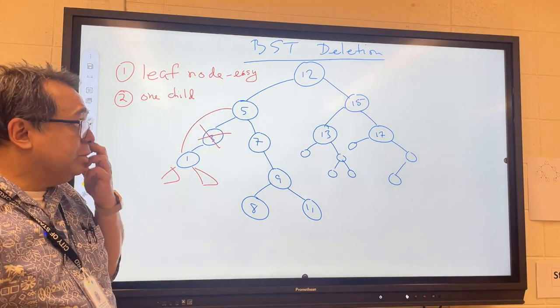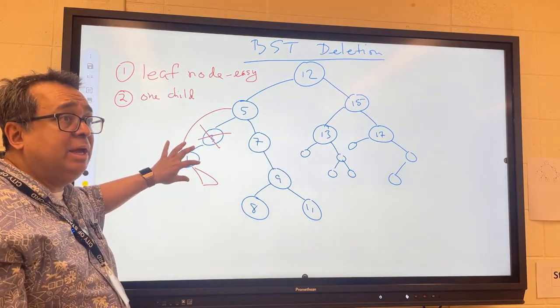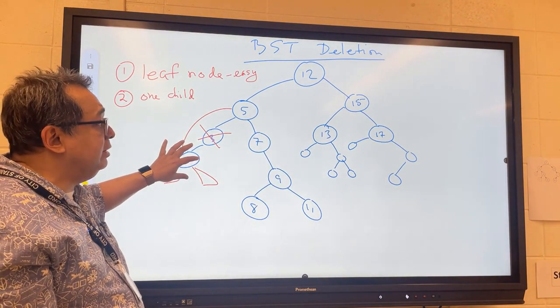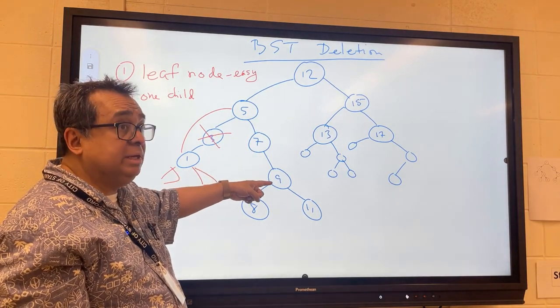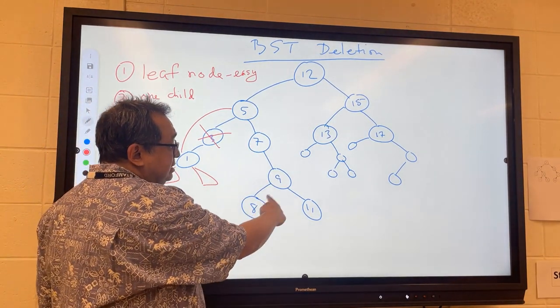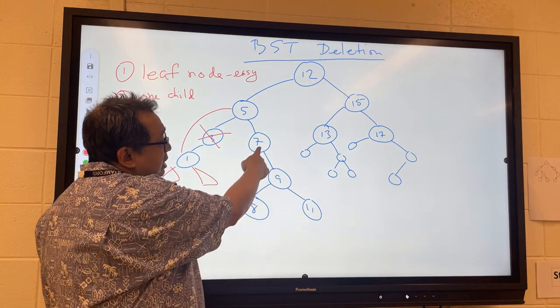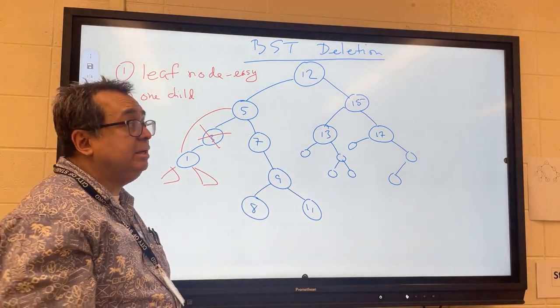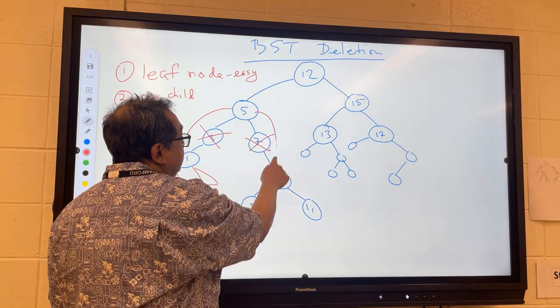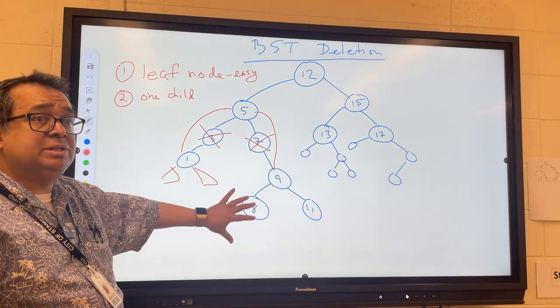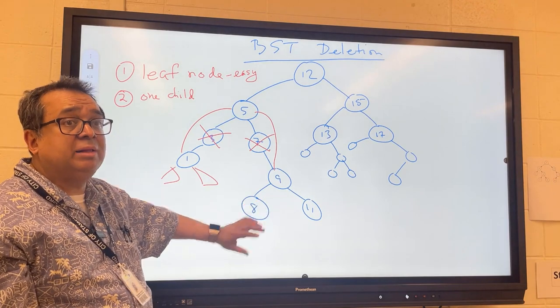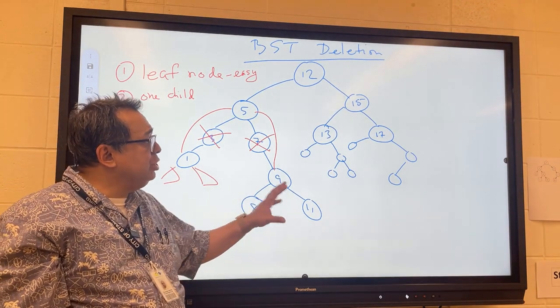The fact that one happens to be a leaf node doesn't really matter. For example, you can see this seven node has a single child and the single child has its own children. But if I was going to delete the seven it's easy because all I do is go like this and now everything else is about this. The tree still works just as well.